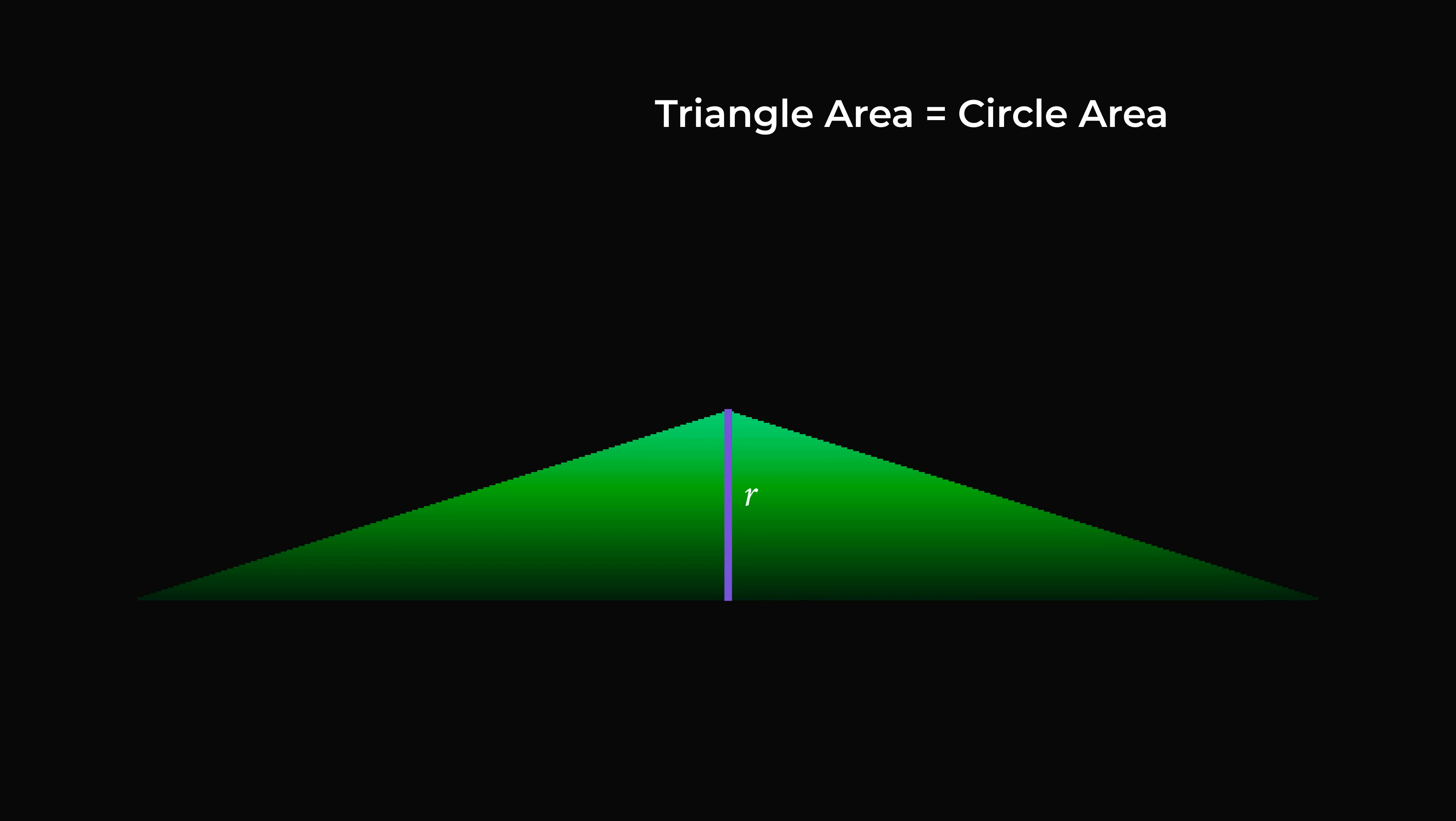The height of this triangle will exactly be the radius of the original circle, and its base will exactly be the circumference, which is 2 pi r. So we take one half times 2 pi r times r, and we get the area of the circle is pi r squared. Wow!